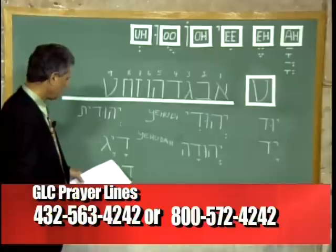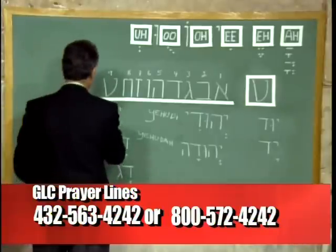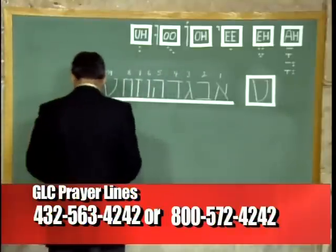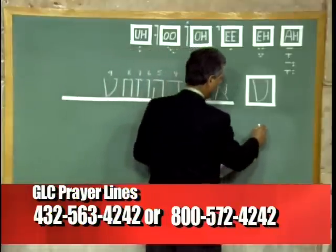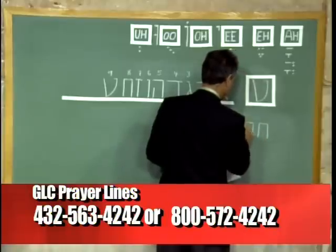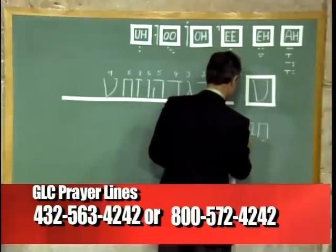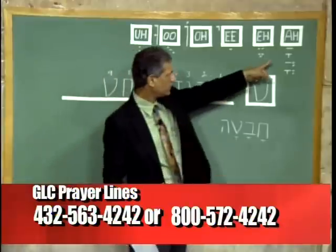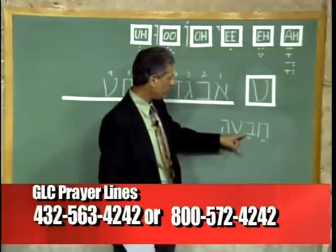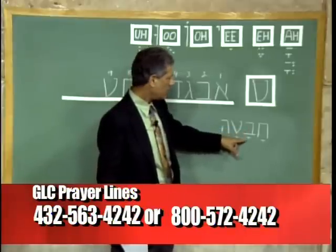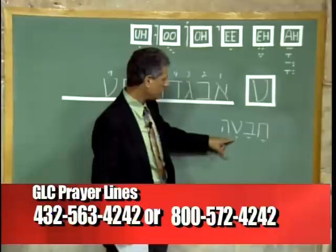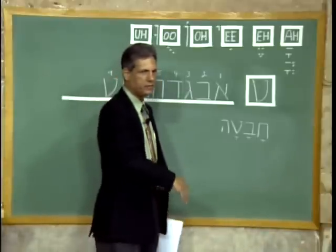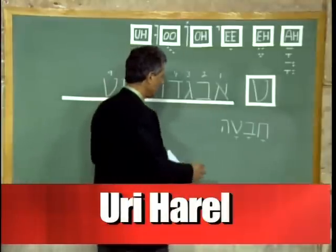Let's use another word that will utilize more of the letters. Here is a word: we have a Chet, the eighth letter, with an Ah sound — Ha. Then we have a Vet, because it doesn't have a dot to make it a Bet — Vet with an Ah sound — Va. And then we have a Tet with an Ah sound — Ha-Va-Ta. Chavata is a strike, a hit, as in 'I hit somebody.'